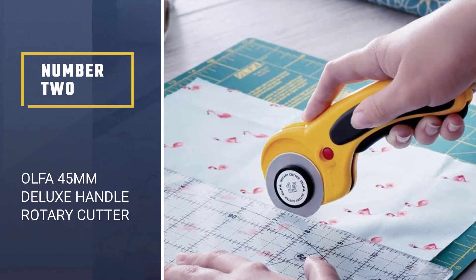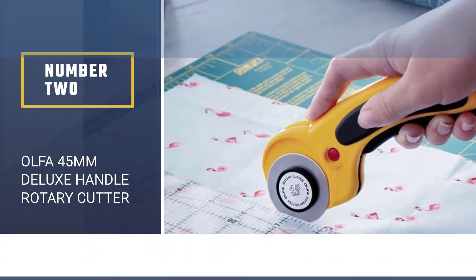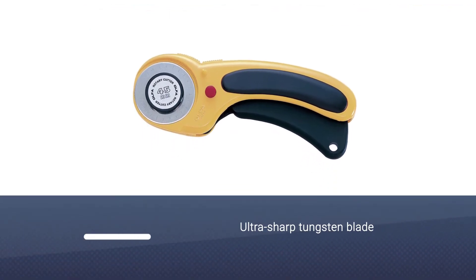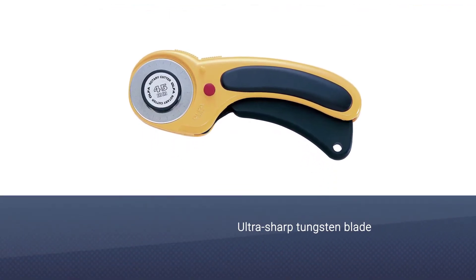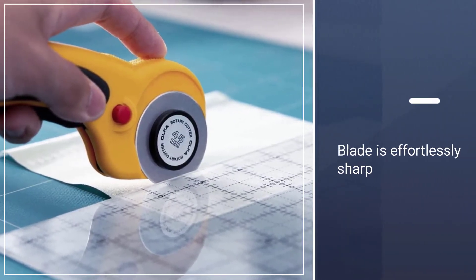Number 2. Olfa 45mm Deluxe Handle Rotary Cutter. With its ultra-sharp tungsten blade and evolved handle ergonomics that aid in cutting, this Olfa 45mm rotary cutter takes second place on our list.